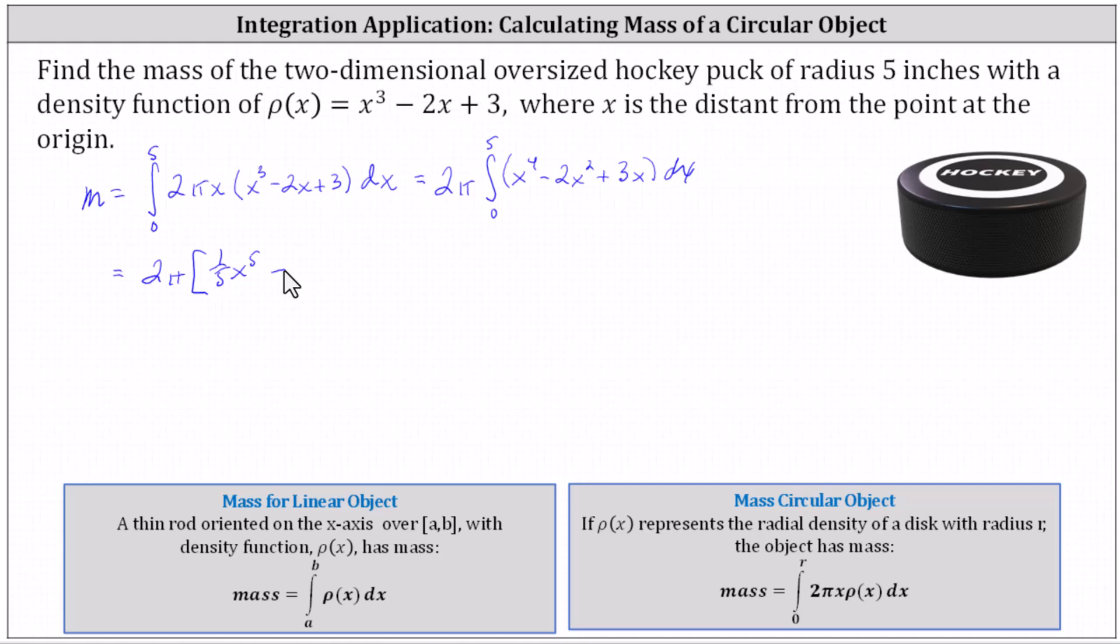And then minus two times x³ divided by three, or -(2/3)x³, plus three times x² divided by two, or (3/2)x².